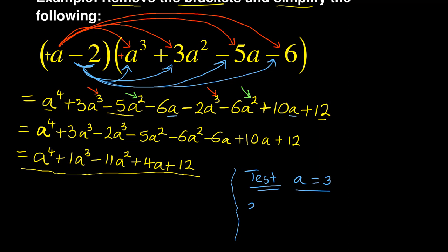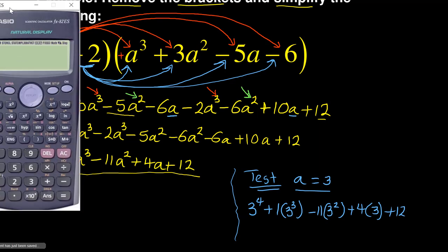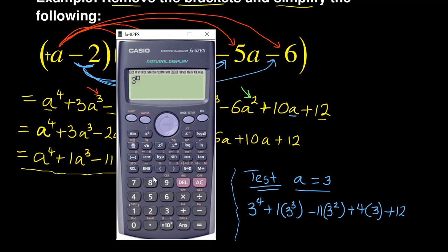Where there is A, you say 3 — A equals 3 — so it's 3 to the power of 4, plus 1 bracket 3 to the power of 3, minus 11 bracket 3 to the power of 2, plus 4 into 3, and then plus 12. If I now take my calculator to simplify that: 3 to the power of 4, plus 1 times 3 to the power of 3, minus 11 times bracket 3 squared, plus 4 into 3, plus 12. My answer is 33.